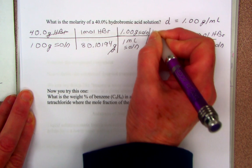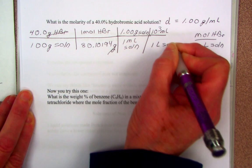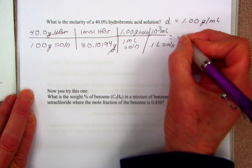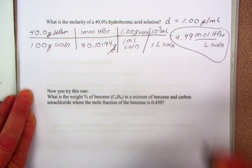And 1,000 milliliters of solution is one liter of solution. So when I do the math, my units all cancel. I get 4.99 moles of HBr per liter.